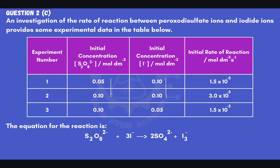For the peroxodisulfate ion, we choose experiments 1 and 2, where that concentration is changing — it has changed by a factor of 2. The iodide ion concentration is held constant. In response, the rate also doubled, going from 1.5 × 10⁻⁵ to 3.0 × 10⁻⁵. So the reaction is first order with respect to the peroxodisulfate ion.